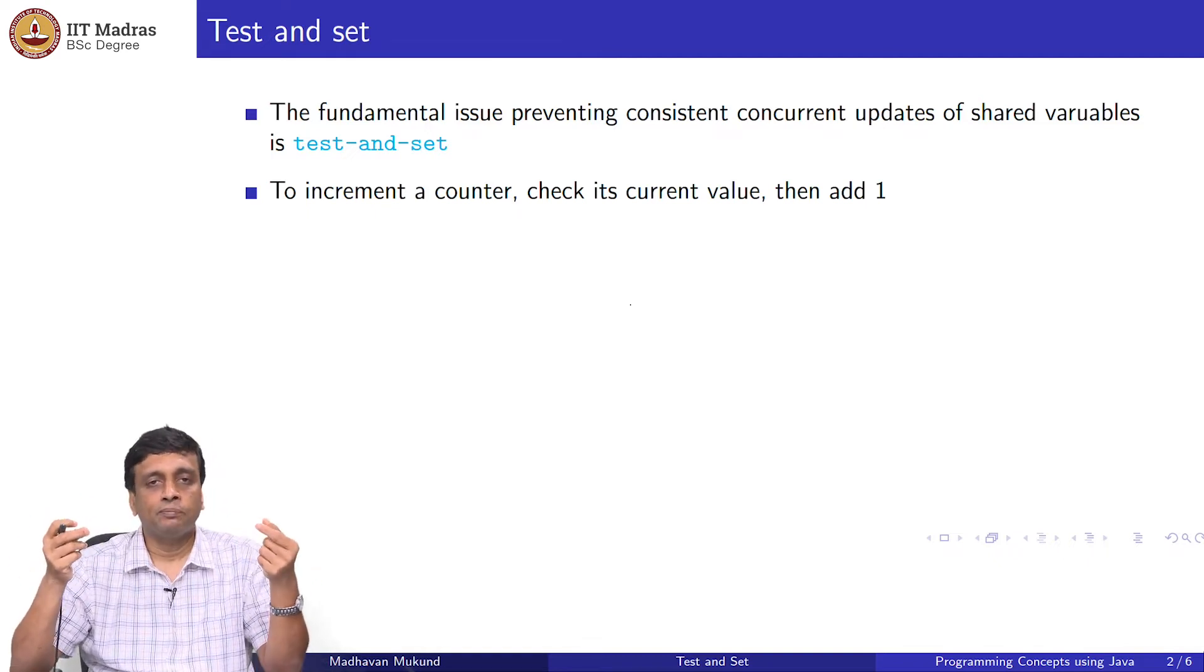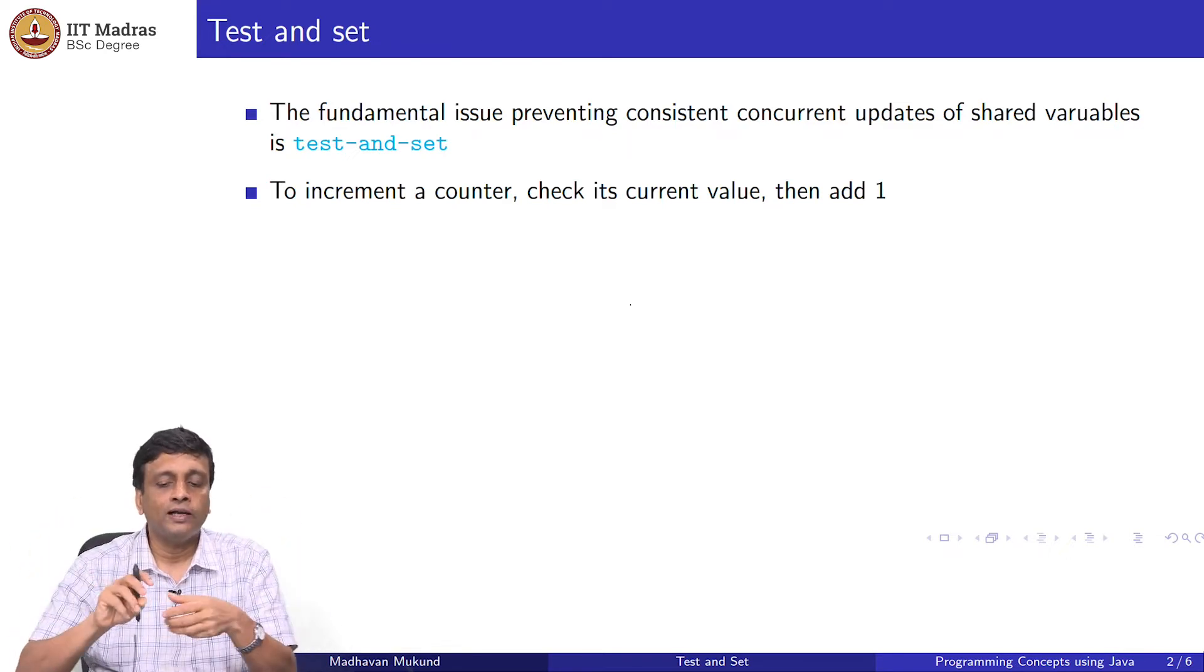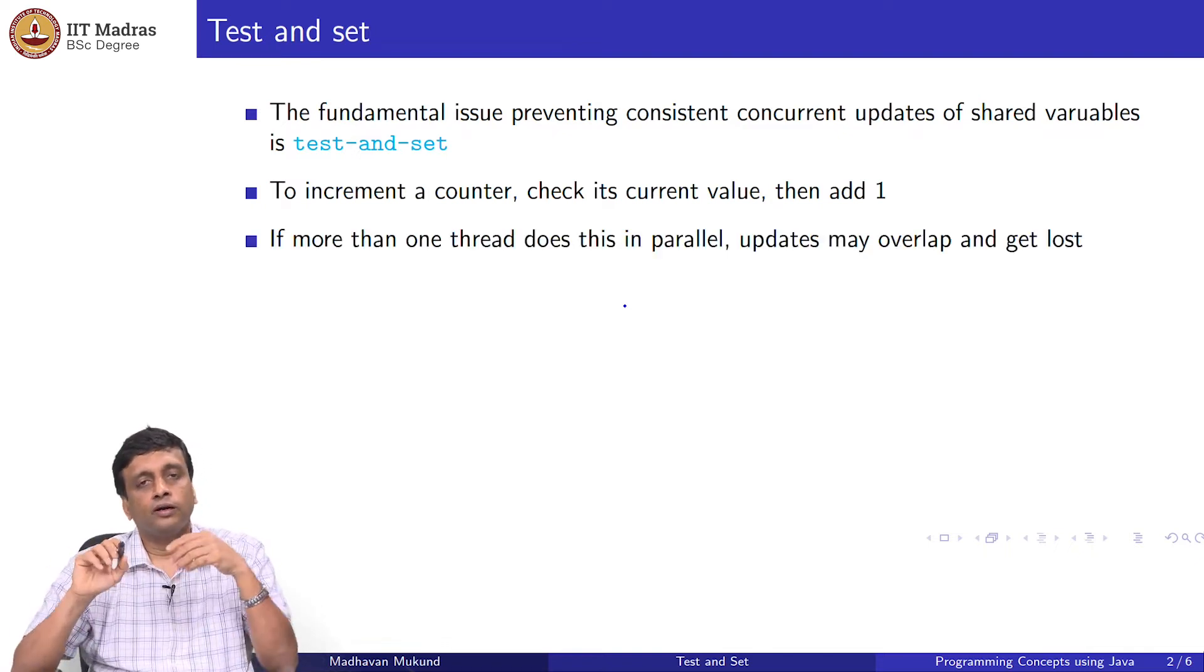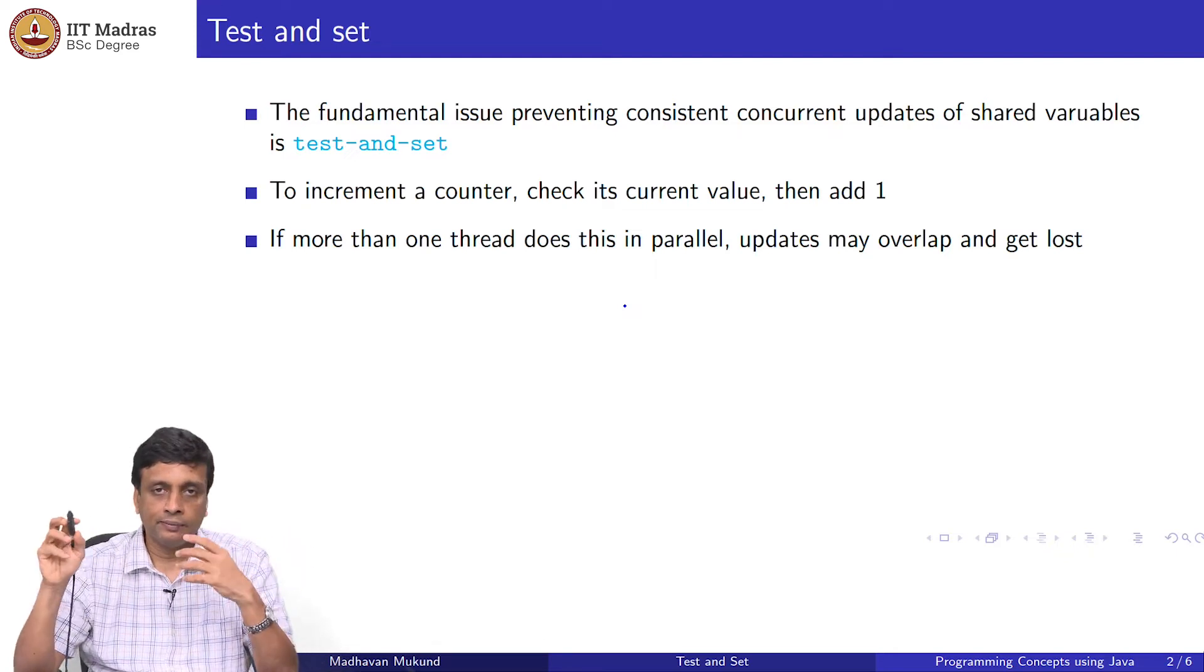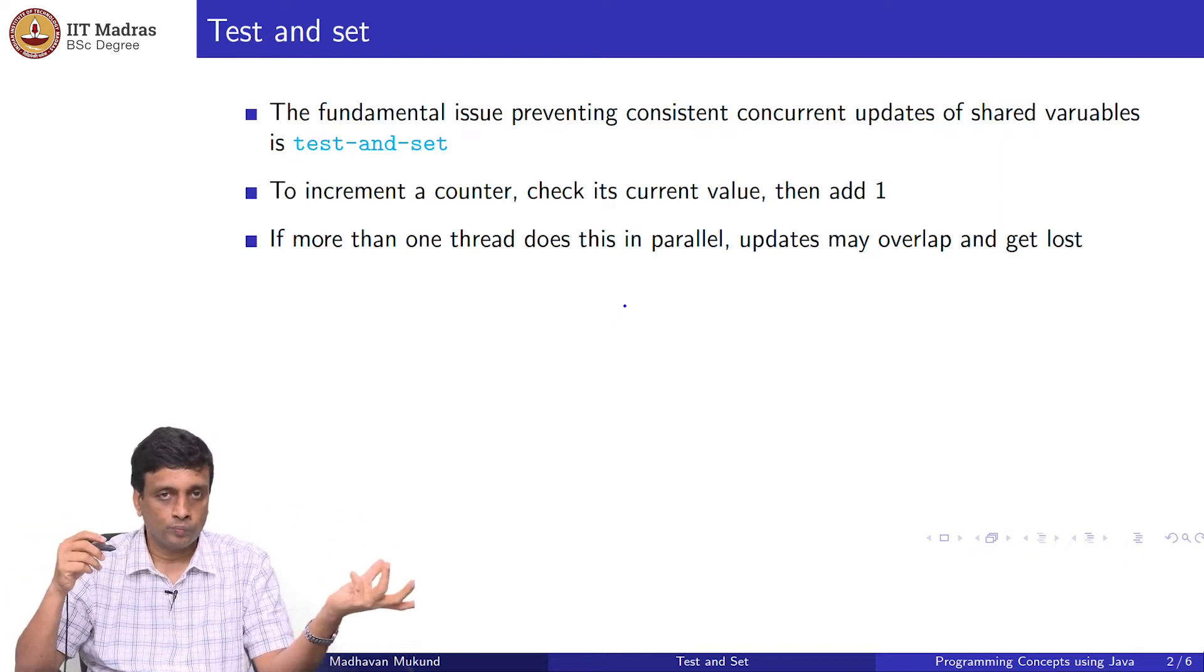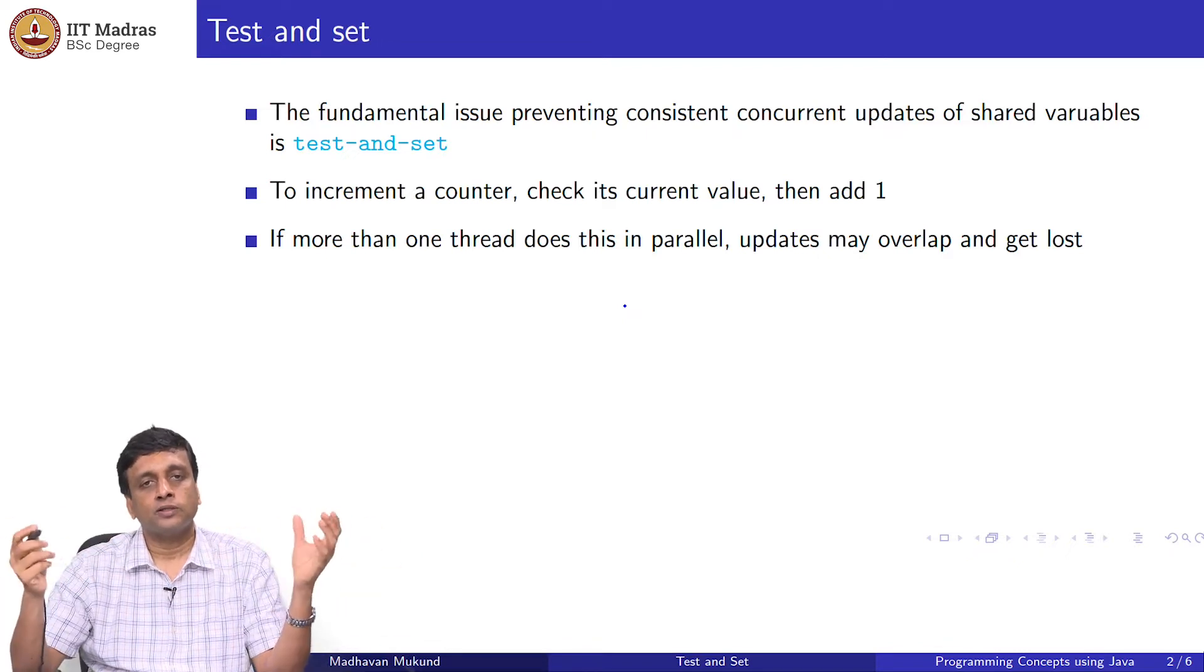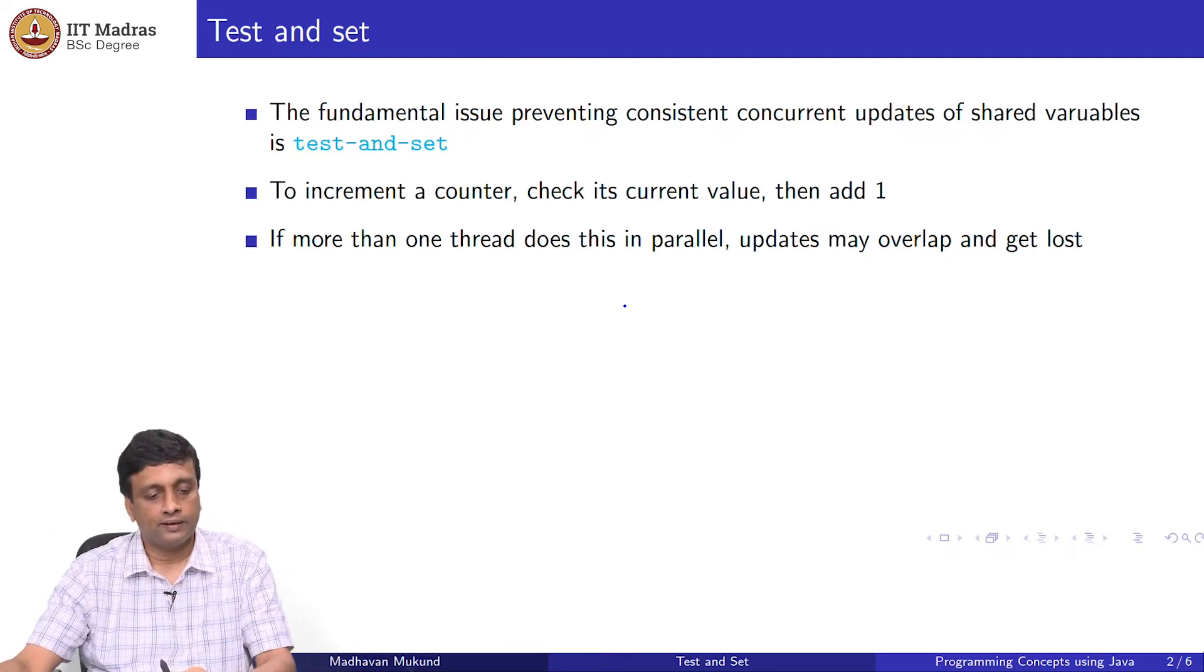Because if the two threads test the value at the same time, they see the same old value, and they put back the same new value, and then we get a lost update. If you have parallel updates in this test and set regime, either they may see inconsistent values—that is, they make an update based on a value that they tested which is no longer true—or some of these updates may get lost because they are both updating the same tested value without realizing that two updates are happening in parallel.